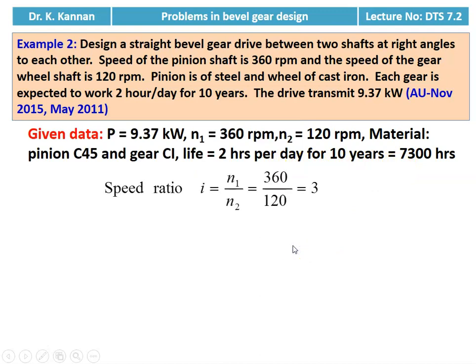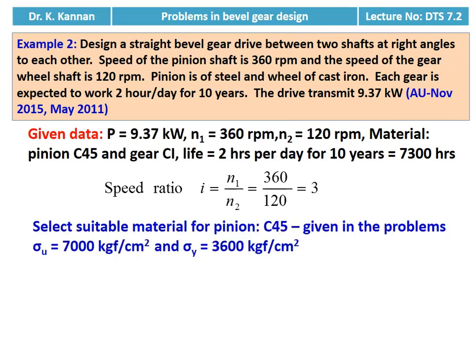Speed ratio: i = N1 / N2 = 360 / 120 = 3. N1 is the pinion speed and N2 is the wheel speed. Material for the pinion is C45 as given in the problem. We take the properties of the pinion material for our design calculations: σU = 7000 kgf/cm² and σY = 3600 kgf/cm².